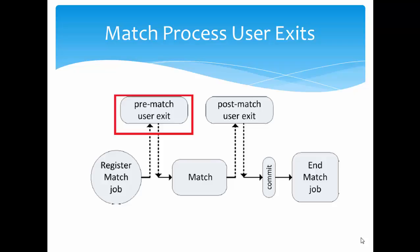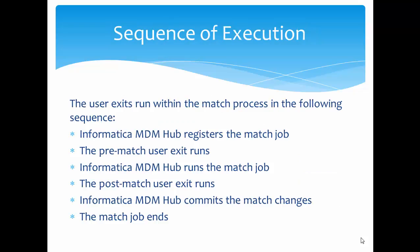There are two types of match process user exits available during the match process: the pre-match user exit and the post-match user exit. Before execution of the match job, the pre-match user exit gets executed, and after the completion of the match job, the post-match user exit starts. After completion of the post-match user exit, the committing of the record happens and the match job ends.